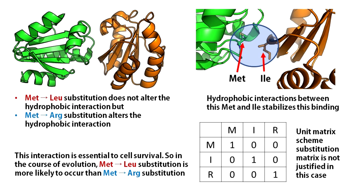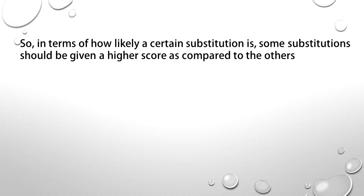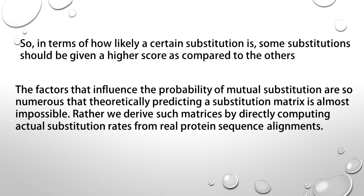In other words, amino acid substitutions are too complex to be modeled using a scoring scheme of 1 for a match and 0 for a mismatch. So, in terms of how likely a certain substitution is, some substitutions should be given a higher score compared to others. The factors that influence the probability of mutual substitution are so numerous that theoretically predicting a substitution matrix is almost impossible. Rather, we derive such matrices by directly computing the actual substitution rates from real protein sequence alignments.